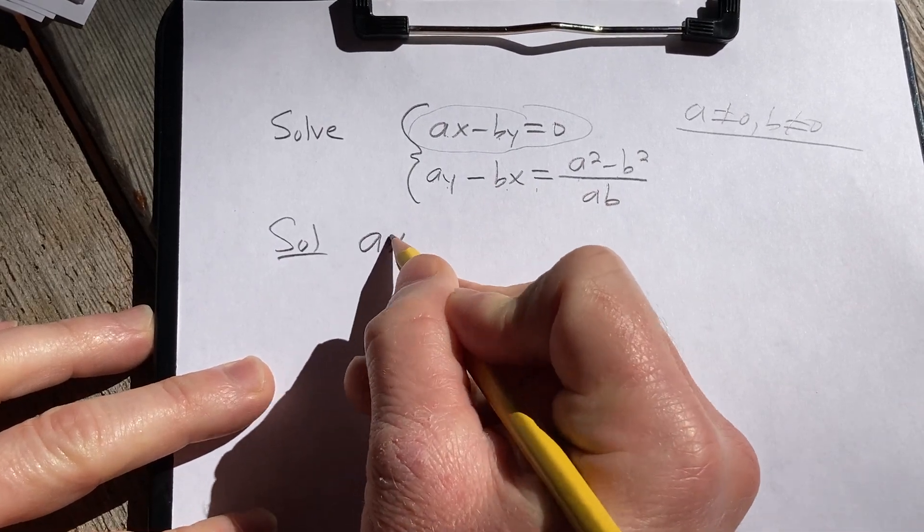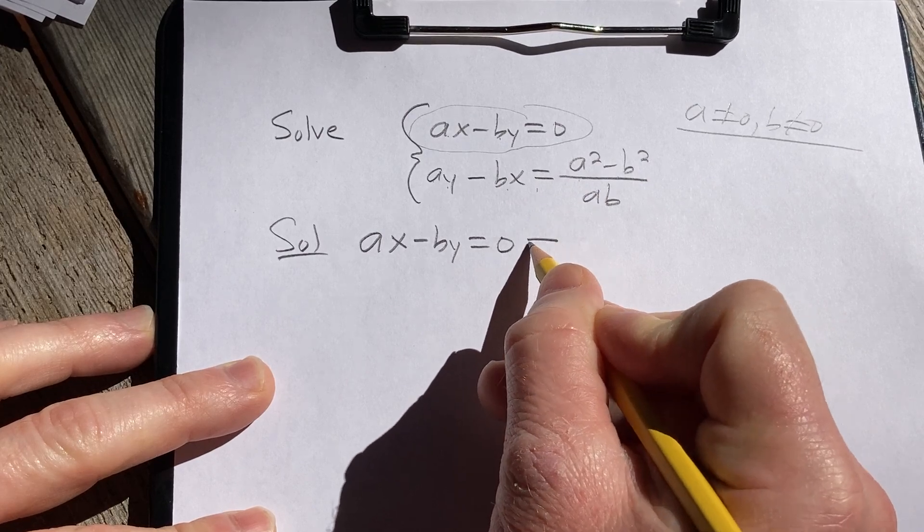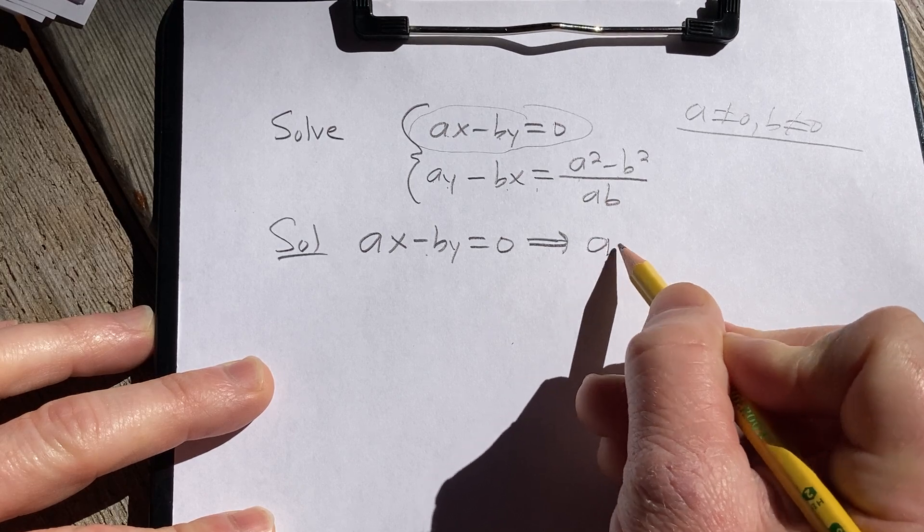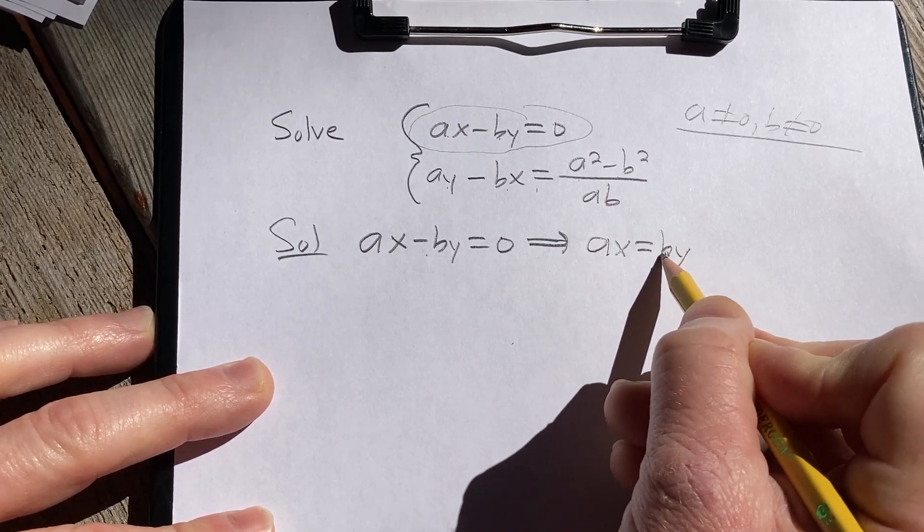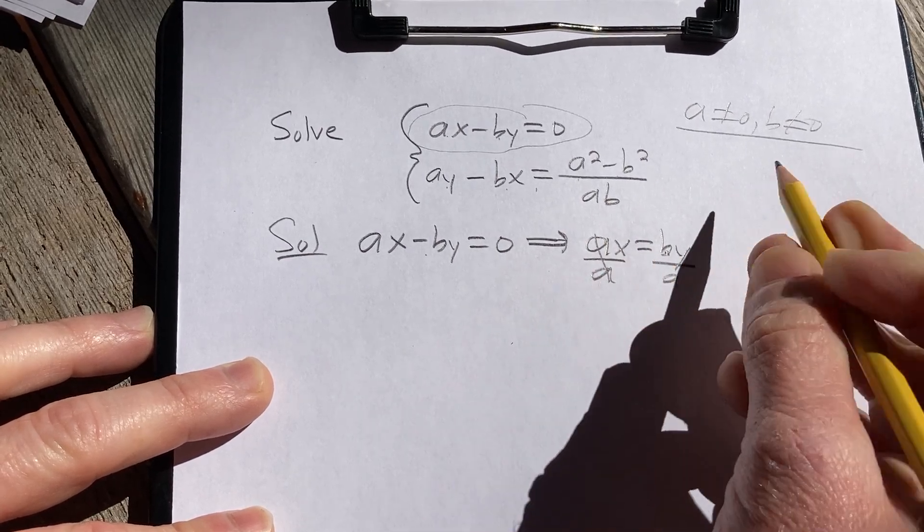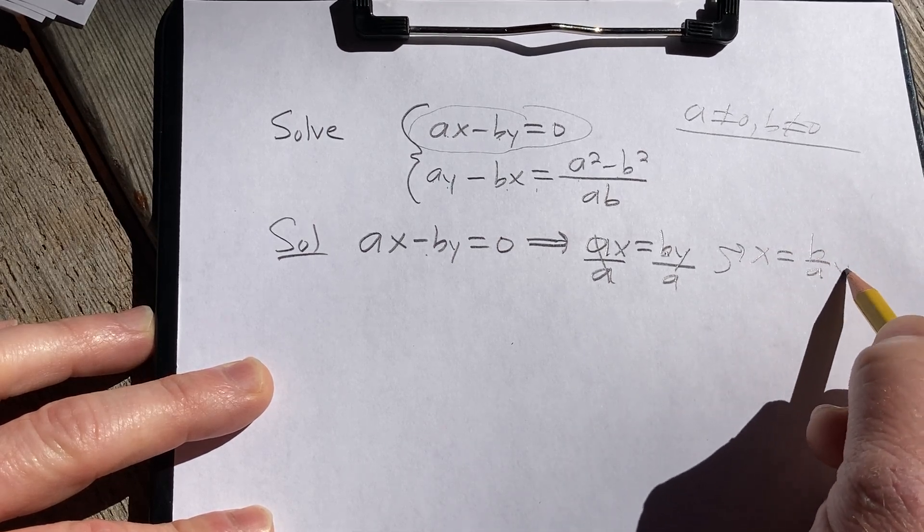So if ax minus by equals zero, this implies we can add by to the right-hand side. So that's ax equals by. And then we can now divide by a. Obviously it's not zero.